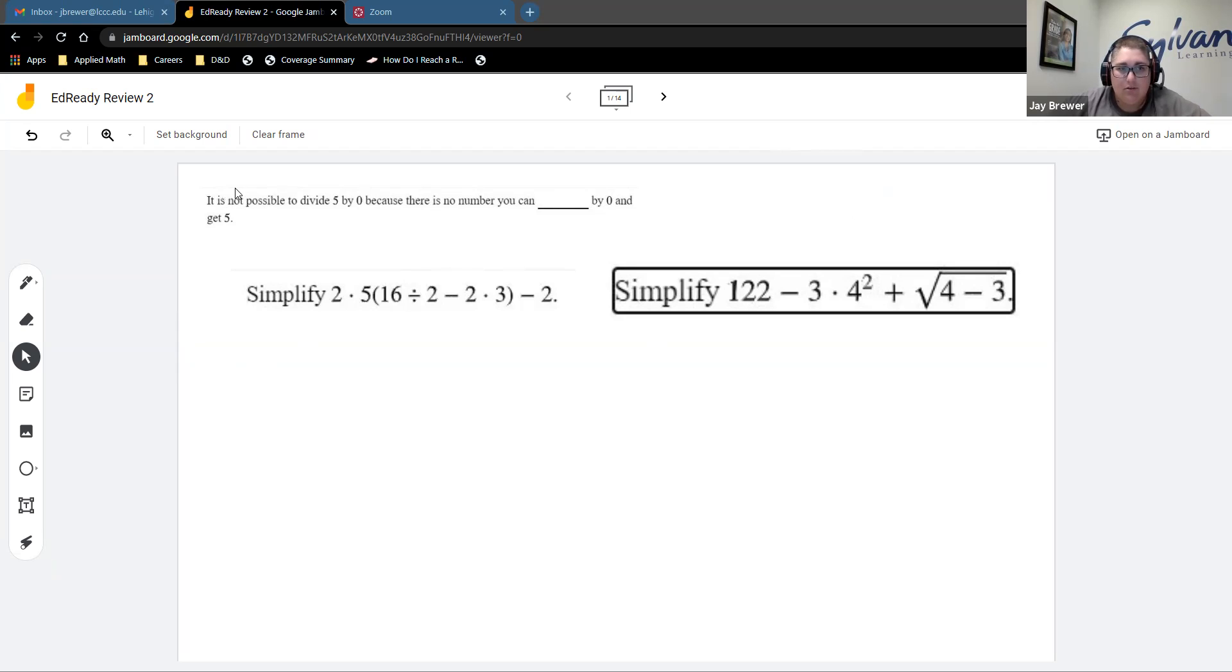So if you look at the first question here, it says it is not possible to divide five by zero because there is no number you can blank by zero to get five. So basically, you just have to think there, what do we do to undo division? Division goes hand in hand with multiplication. So you can't multiply any number by zero and get five out. So that's why, if anyone was ever wondering why you can't divide by zero, that is why. So the answer there that EdReady is looking for will be multiply.